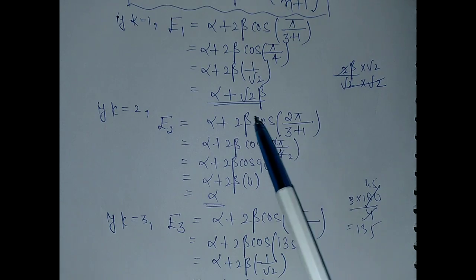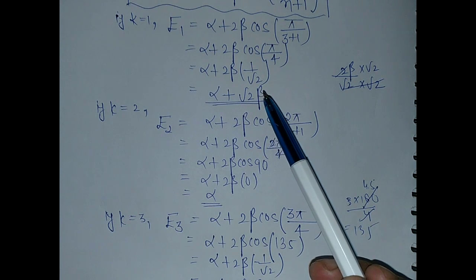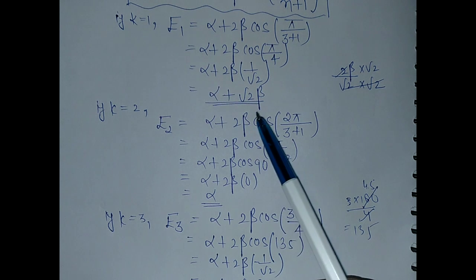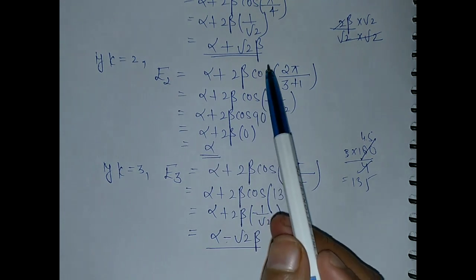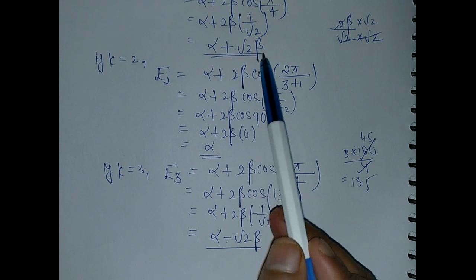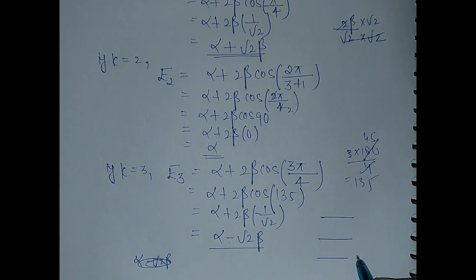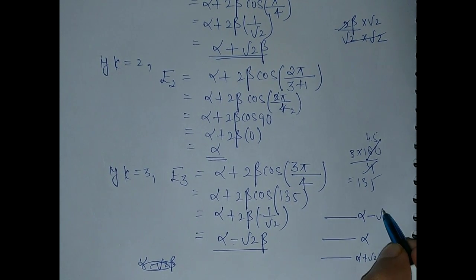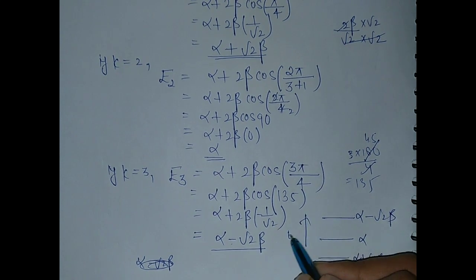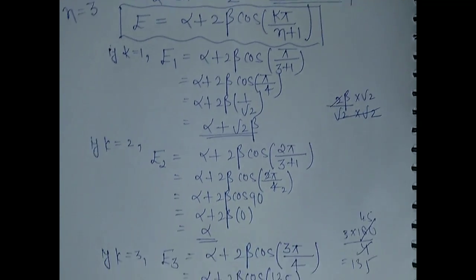If you want to know the order of energy, remember that both alpha and beta are negative. So alpha minus beta — since beta is negative, minus a negative gives plus — this value will be the highest. The energy order from lowest to highest is: E₁ = alpha plus √2·beta (lowest/most stable), E₂ = alpha, and E₃ = alpha minus √2·beta (highest). By this general formula we can directly calculate the roots of the secular equation.